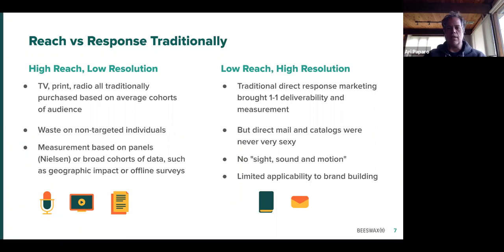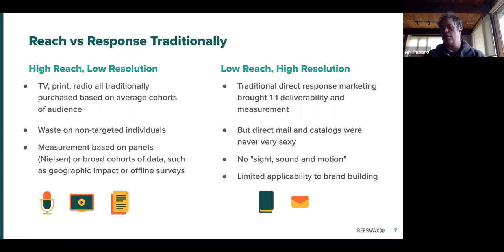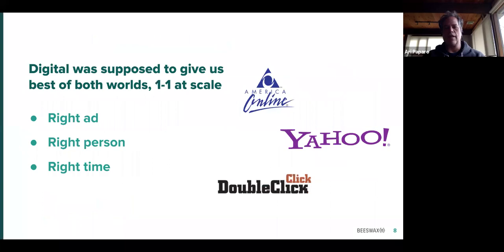There's also a lot of waste because if you're buying ads on a television program, a good portion of the people who were exposed were not in your target group — and that was accepted because that was the price of reach. On the other hand, you had low-reach but high-resolution media like direct response marketing and later email marketing. This was incredibly powerful because you could use data overlays to identify the users and give them messages specific to your product. But the obvious challenge is that it's not very sexy — you're talking about mail and other forms like that, no sight, sound, and motion.